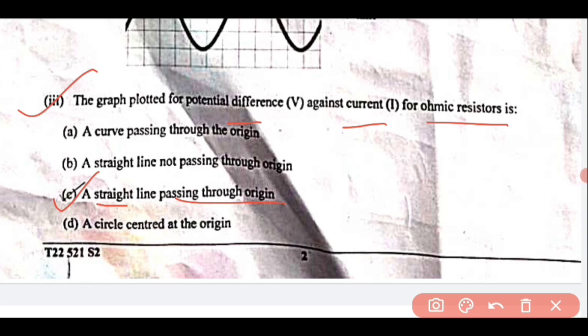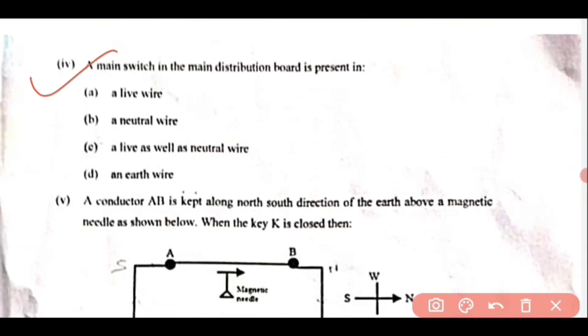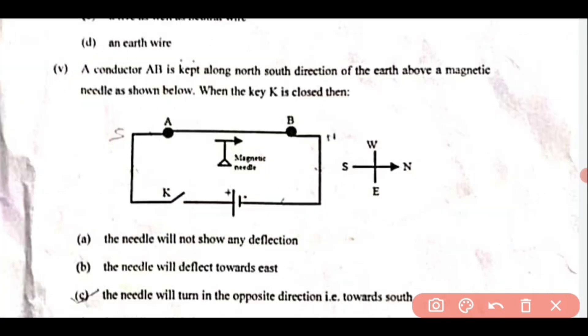Question 4: What is the main switch in the main distribution board? Option C is correct: live as well as neutral wire. Moving ahead to question 5.